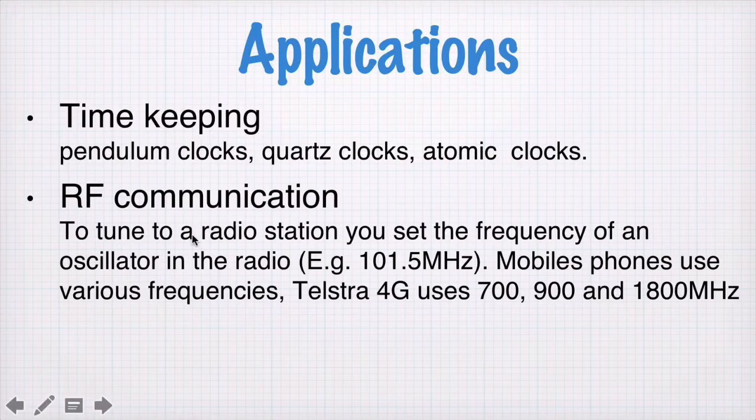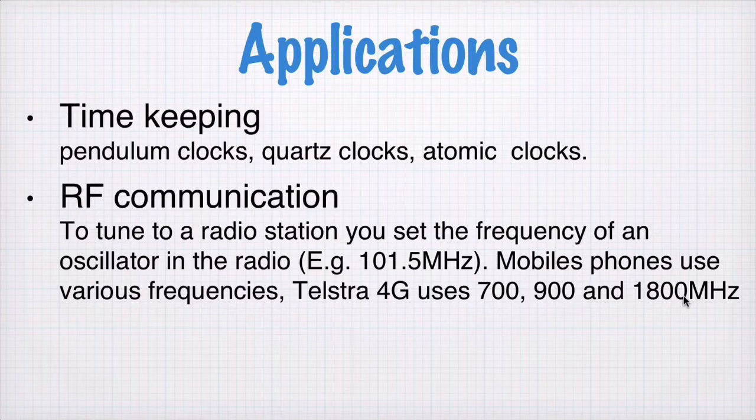RF communication. If you tune to a radio station, then you set the frequency of an oscillator in your radio. If you're listening to Triple J in Canberra on 101.5 MHz, when you tune to that station, you tune an oscillator in your radio to this frequency. Mobile phones use various frequencies. Telstra 4G uses 700, 900, and 1800 MHz. And your phone has to have oscillators that can tune to these frequencies to use those bands for the phone network.